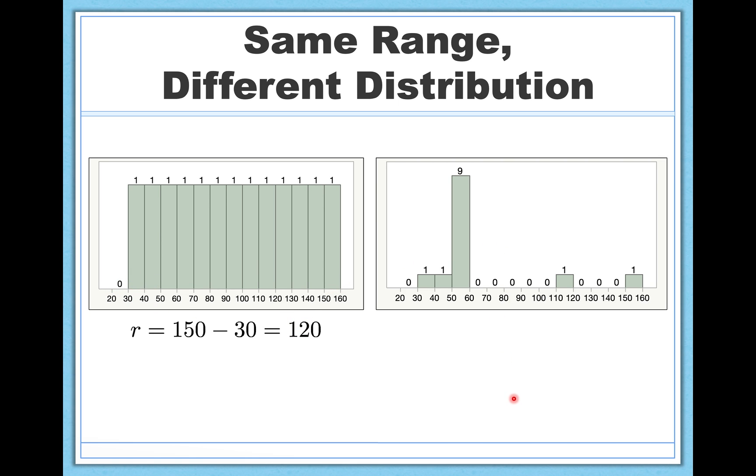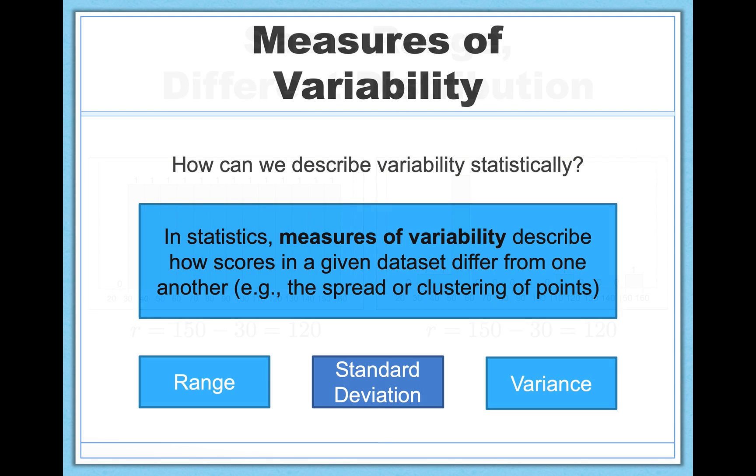But let's look at a second data set. In this case, the range is still 120 because our highest and lowest values are the same, but everybody's kind of over here. And there's just a couple outliers beyond that. So again, if I were to just tell you the range, I might be misleading you a little bit because you're not sure if it looks like this on the left or if the data looks like this on the right. And this is where standard deviation and variance come into play.